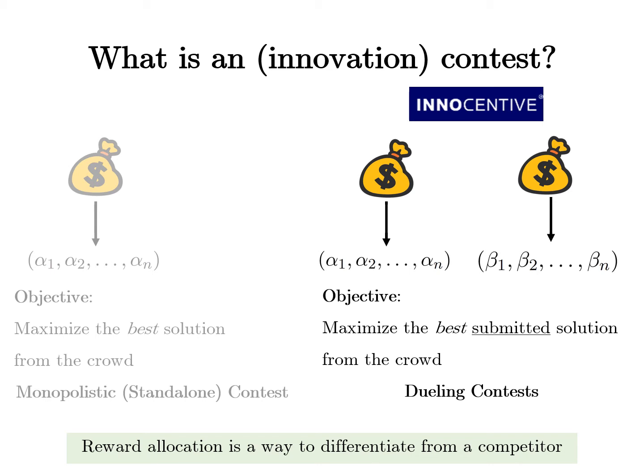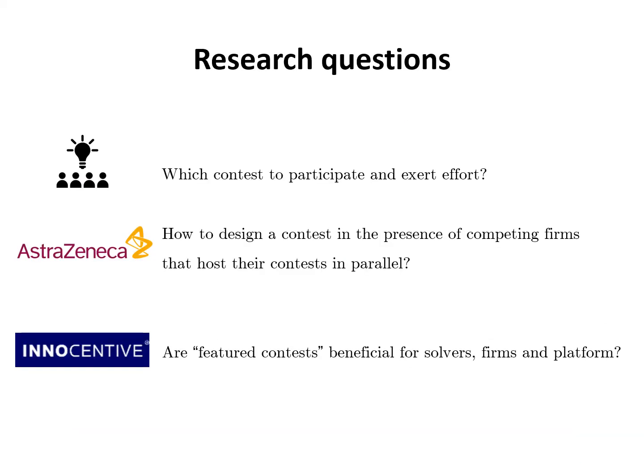Prizes and solver nudges motivate our main research questions. On the solver side: how do solvers self-select contests, and what is the equilibrium participation and effort at the solver level? On the firm side: what prize allocation to offer in the presence of competing prize allocations, and what is the equilibrium prize allocation among competing firms? On the platform side: does solvers' option to self-select a contest benefit or hurt the solvers themselves, and how does solvers' self-sorting affect platform welfare?